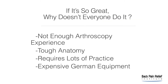For the big question: if endoscopic spine surgery for foraminal stenosis is so great, why doesn't everyone do it? There are four main answers. Number one: not enough arthroscopy experience — the anatomy is confusing in a small foraminal canal and doesn't look like any anatomy in any anatomy book. Number two: this tough anatomy requires a lot of arthroscopy experience to perform this operation safely — it is not an easy orientation, and the nerve is in tight quarters and must not be injured. Number three: it takes a lot of practice to do this safely, a lot more than doing a fusion. Number four: it requires expensive German arthroscopic equipment.